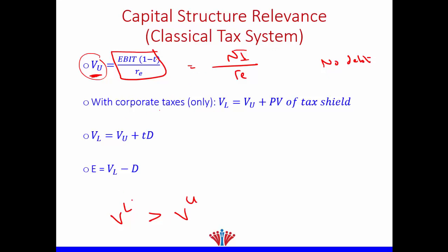Assuming corporate tax only, the value of the levered firm is bigger than the value of the unlevered firm. The difference is the present value of the tax shield. Every time we use debt, we pay interest, and this interest is tax deductible — meaning we pay lower taxes — which is why we call it a tax shield.